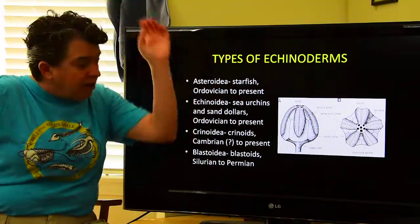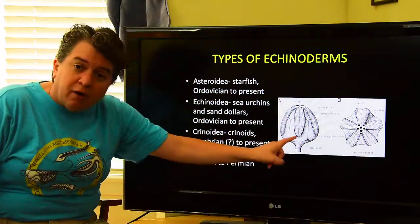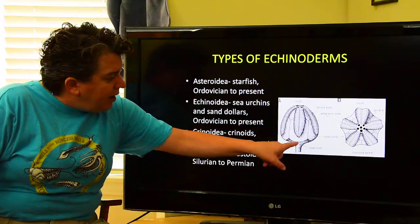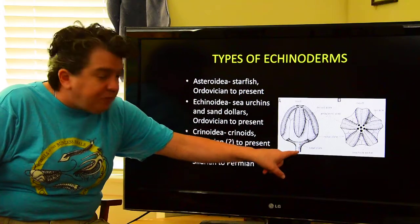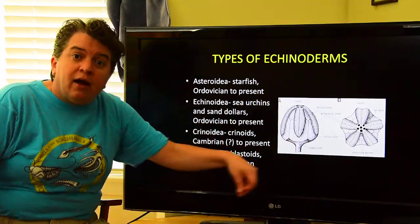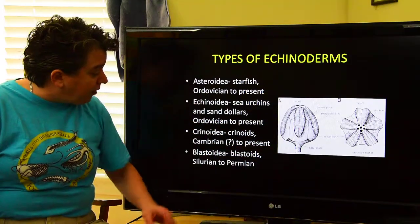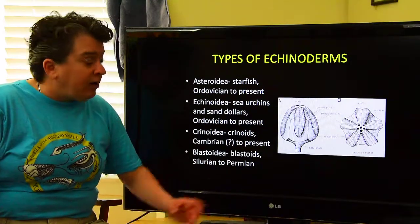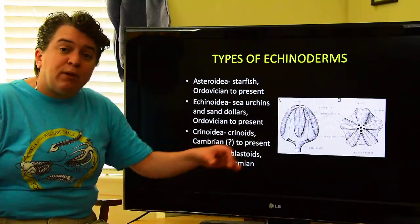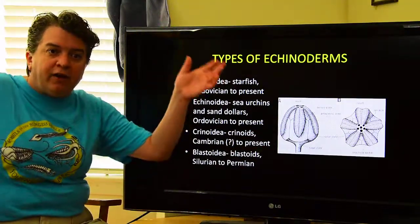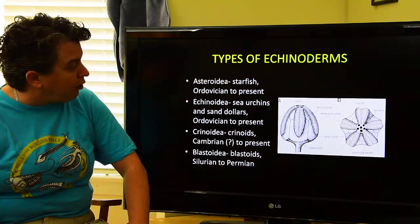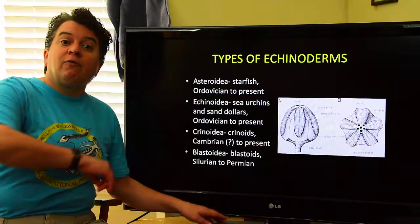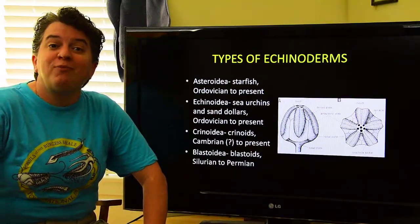Similar to crinoids are blastoids, except they don't have the nice arms. They have a stalk that holds them to the bottom, with a mouth structure on top. Blastoids live from the Silurian to the Permian. Just think of blastoids as crinoids without the arms. And we're going to end there and pick up more in volume three.